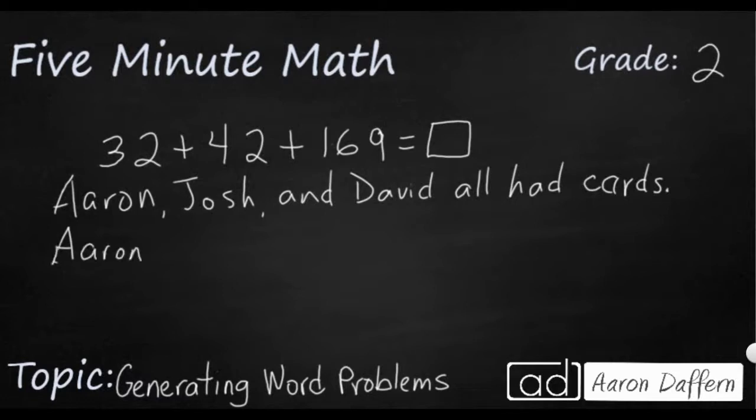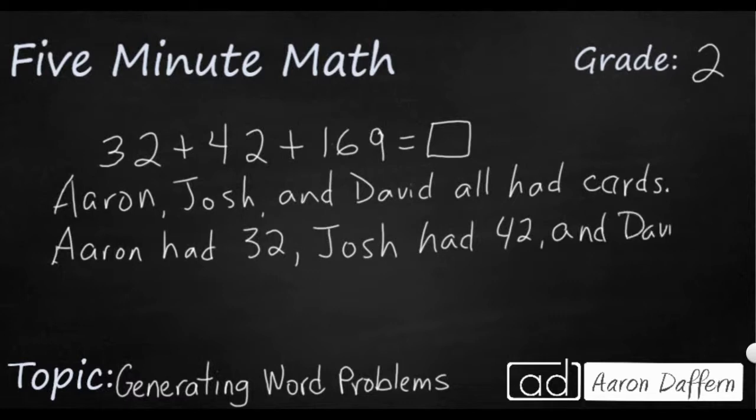Aaron had 32. You see what we're going to do is we're just going to give each person a number. Josh had, my next number is 42. And we'll say David had, and that's the biggest number, 169.